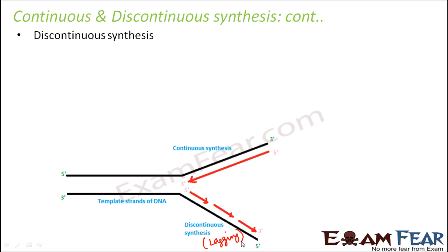DNA polymerase keeps on adding a new free nucleotide to the three-prime end of a new strand. On the leading strand there is a free three-prime end, so DNA polymerase can do its job. But on the lagging strand, the free end is the five-prime end — there is no three-prime end — so DNA polymerase cannot add a free nucleotide, because it can only add to a pre-existing three-prime hydroxyl group.